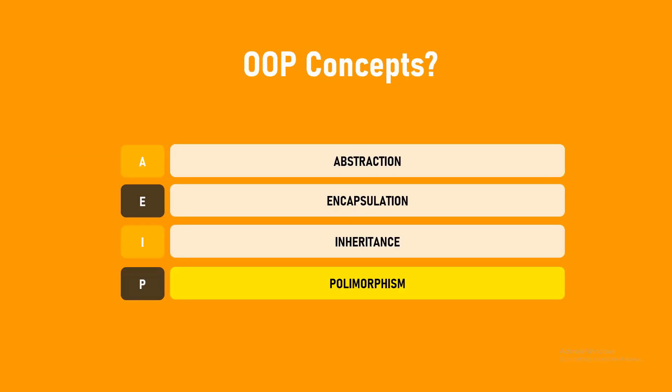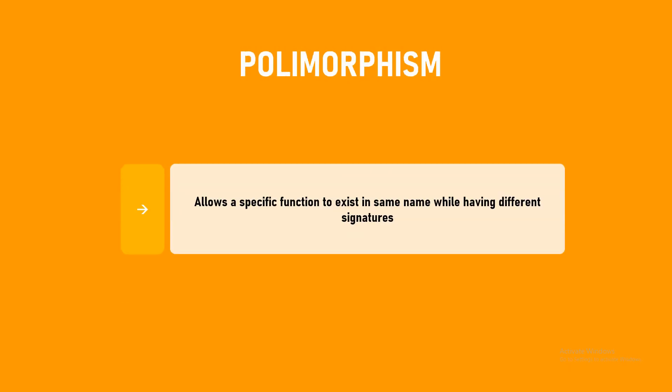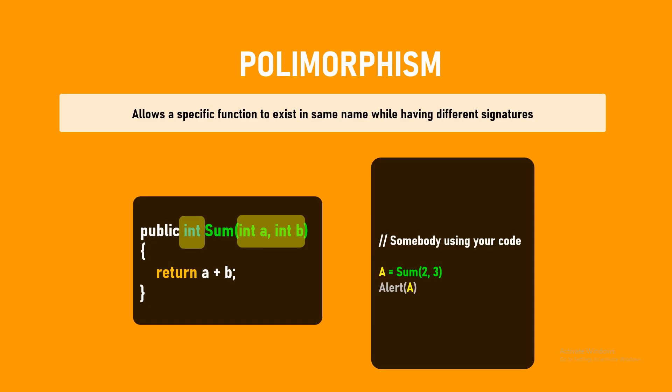Now let's look at polymorphism. Polymorphism allows a specific function to exist with the same name while having different signatures. There can be many functions with the same name, but they must have different signatures. The signature is made up of the return type and the function arguments together. So you can have the same function name with different signatures.